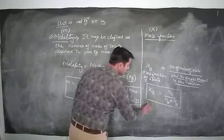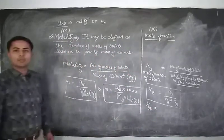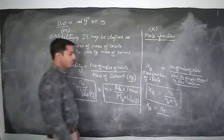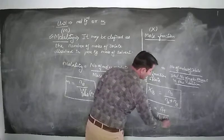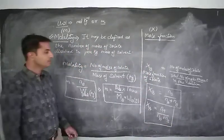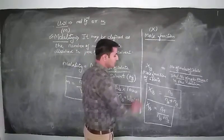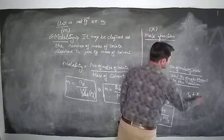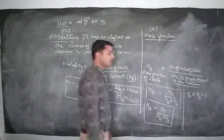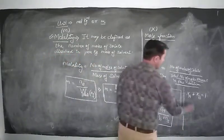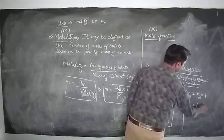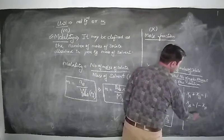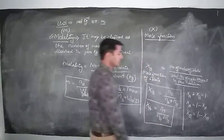Similarly, we can calculate xA — the mole fraction of solvent — as number of moles of solvent divided by total number of moles present in the solution. One important point: the sum of xA and xB is always equal to 1, even if verified algebraically. So xa plus xb is always equal to 1. If we need to find xA and xB is given, xA = 1 minus xB. Similarly, xB = 1 minus xA.